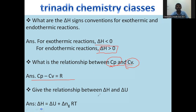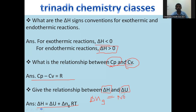Next: give the relationship between ΔH and ΔU. ΔH is the change in enthalpy and ΔU is the change in internal energy. These two are related as: ΔH = ΔU + ΔnRT, where Δn is equal to the number of moles of gaseous products minus the number of moles of gaseous reactants.